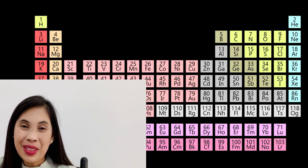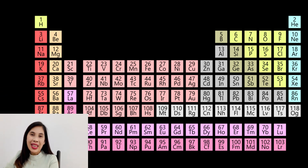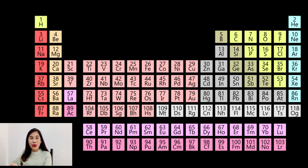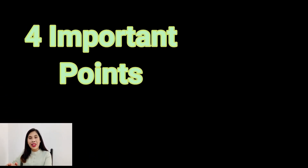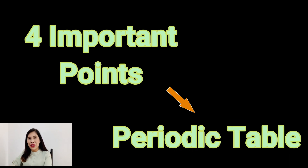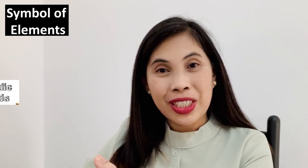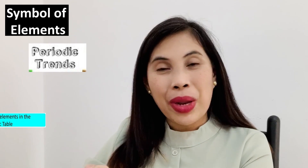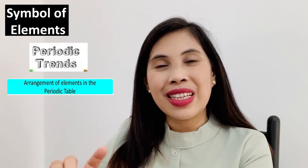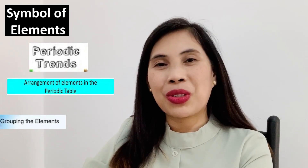Good day everyone! This is Ms. Ines. Welcome back to my channel. Today we're going to talk about the periodic table. We're going to study the periodic table and I'm going to share four important points to consider: the symbol of elements, the trends in the periodic table, the arrangement of elements, and the groupings of the elements in the periodic table.